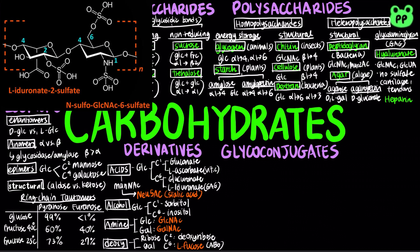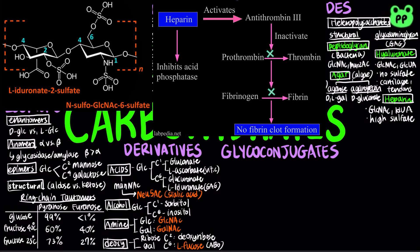Heparin consists of repeating units of GlcNAc and iduronic acid. It is very negatively charged as it contains four sulfate groups. It is derived from a type of leukocyte known as mast cells, and it inhibits coagulation by binding to antithrombin, which causes antithrombin to bind to and inhibit thrombin, a protein essential to blood clotting. It also stimulates the release of LDL, or low-density lipoprotein, which delivers fat molecules to cells.